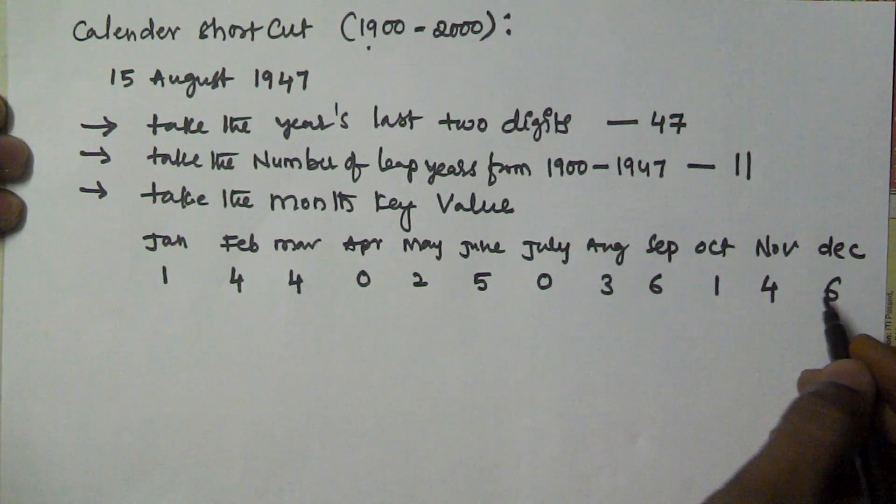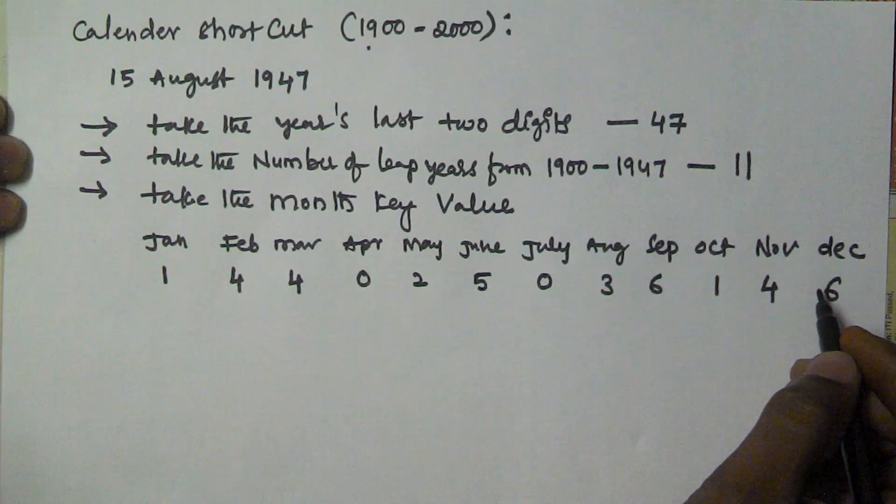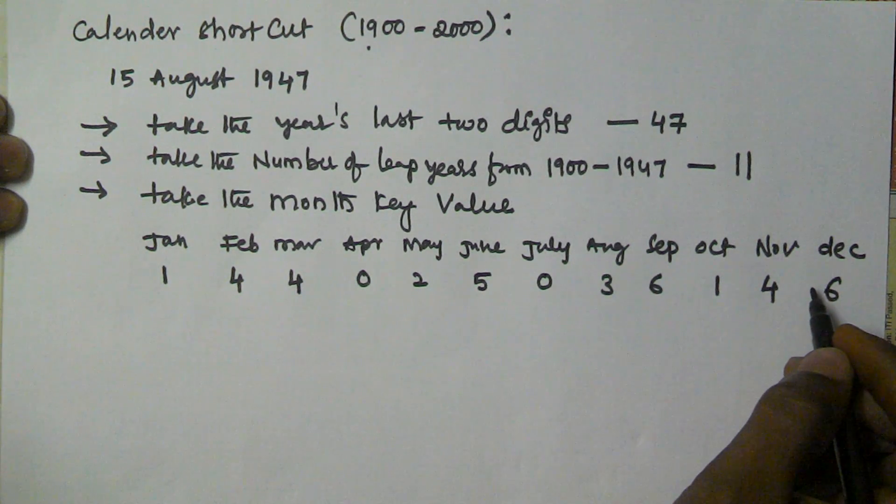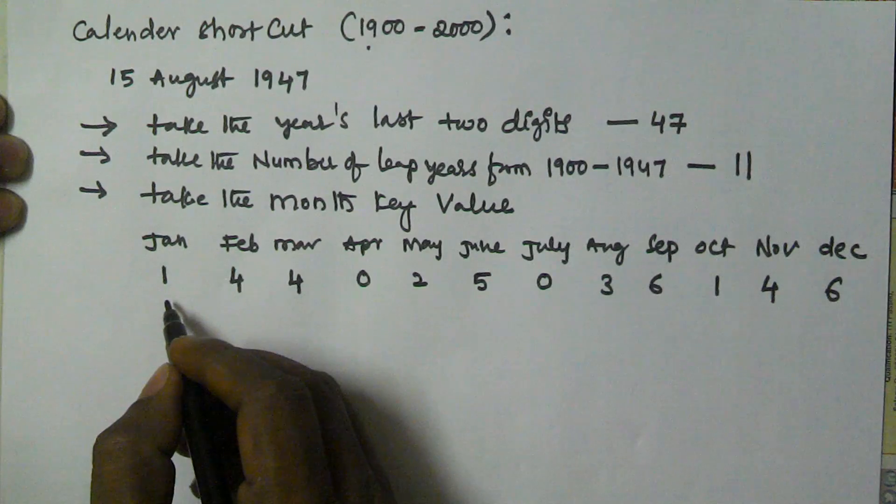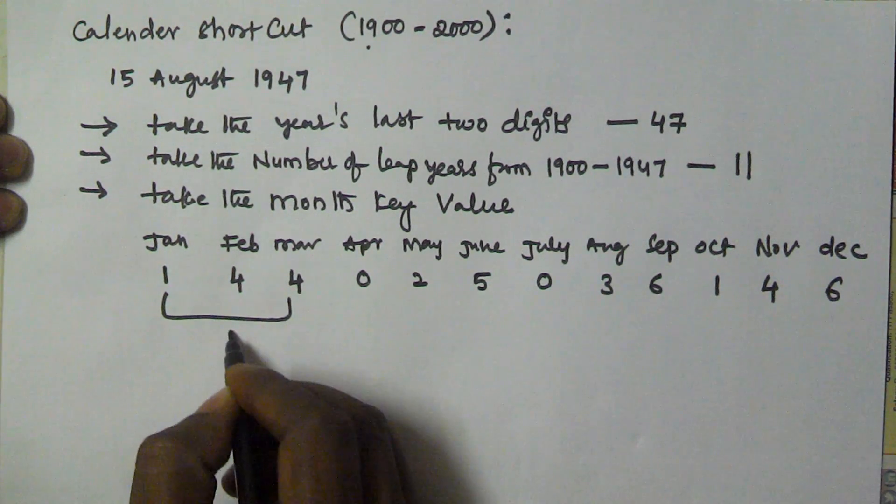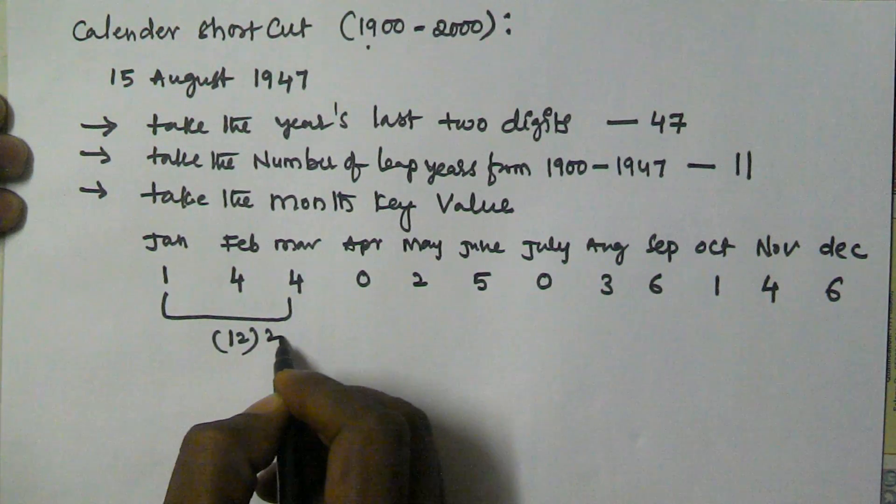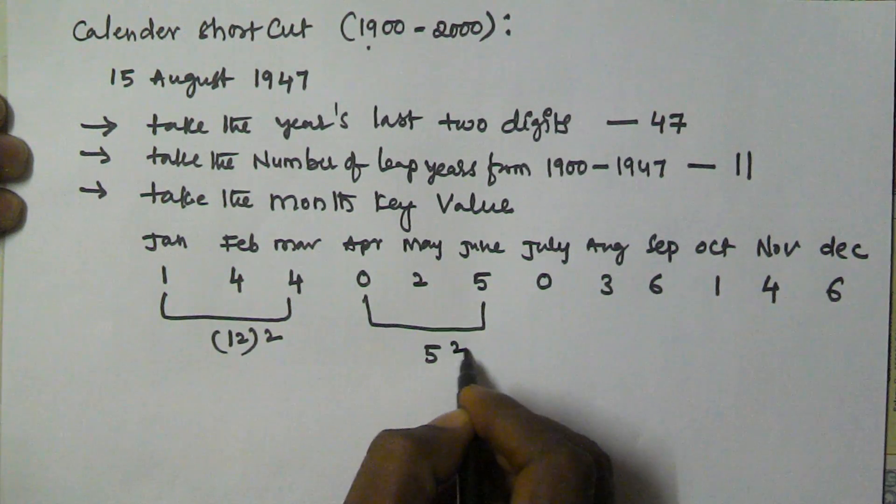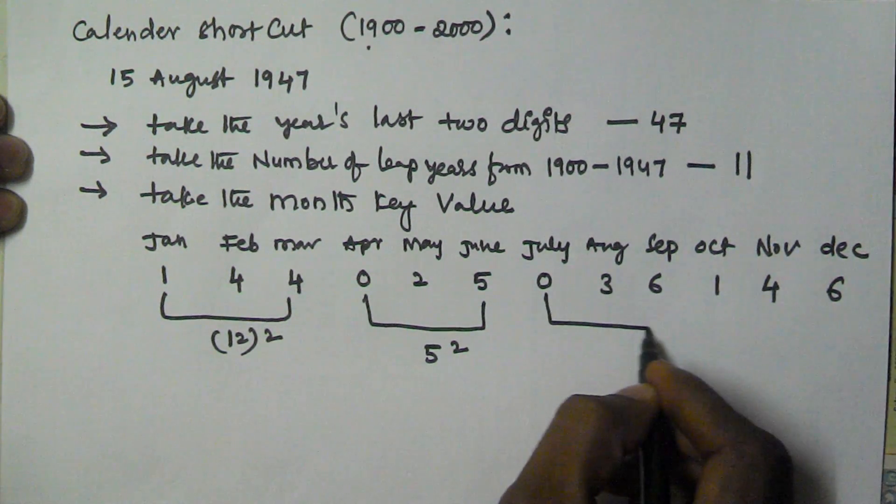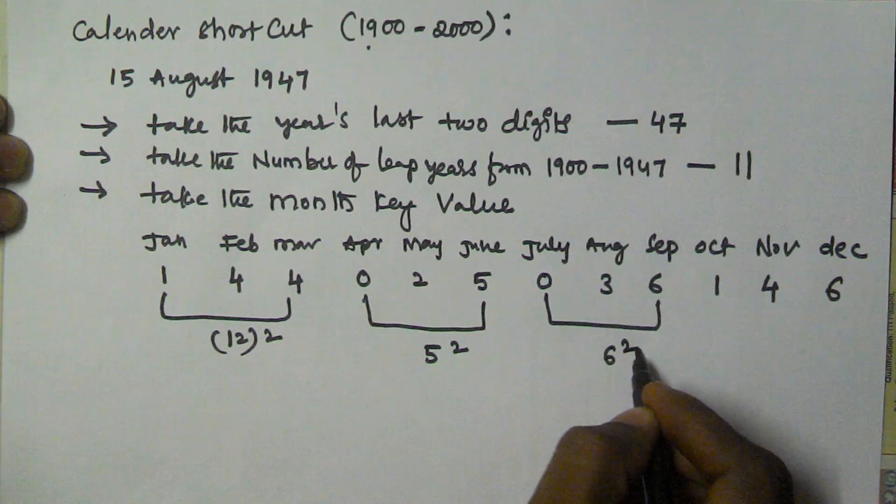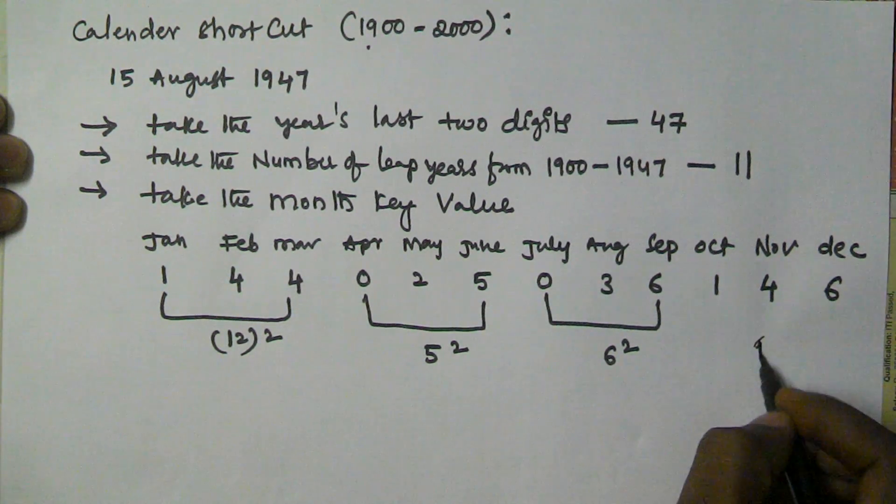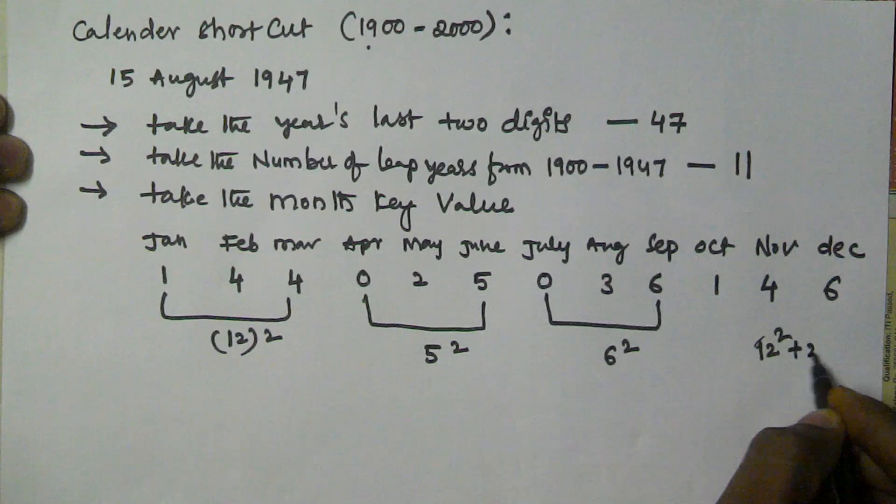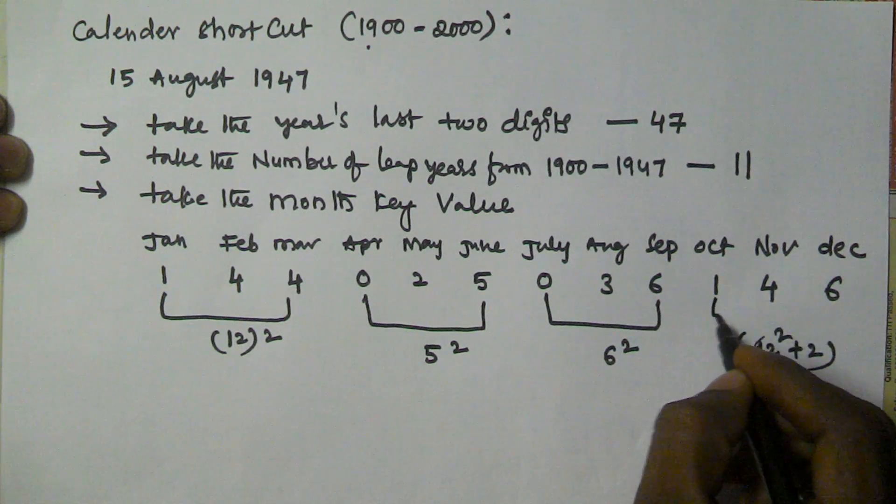You have to remember these month key values. How can you remember? First three are 1, 4, 4, 0 - that's 12 squared. Second three are 5 squared. Next three are 6 squared. The last one is 12 squared plus 2.